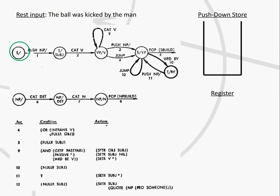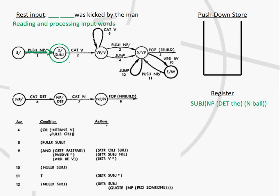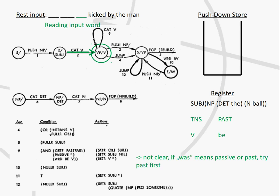Now I have another example with a passive sentence — nearly the same sentence as before, but in the passive. We also had to extend the automaton with some additional transitions and actions. As in the first example, we are reading 'the ball', getting our subject 'the ball' in bracket format. We then read the word 'was'. At this point, the automaton does not know it is a passive sentence, so it tries to parse it as an active. It sees that 'was' is the past form of 'be' and stores it in the register.